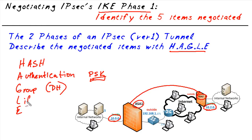The L is for lifetime — how long should this IKE Phase 1 tunnel stand up? Should it be a day? Should it be an hour? The shorter the lifetime, the more secure it's considered, because if it gets torn down after an hour it has to be rebuilt, generating new keying material through new Diffie-Hellman, making the whole thing more secure. The default on a Cisco router for a site-to-site tunnel is one day for the IKE Phase 1 tunnel.